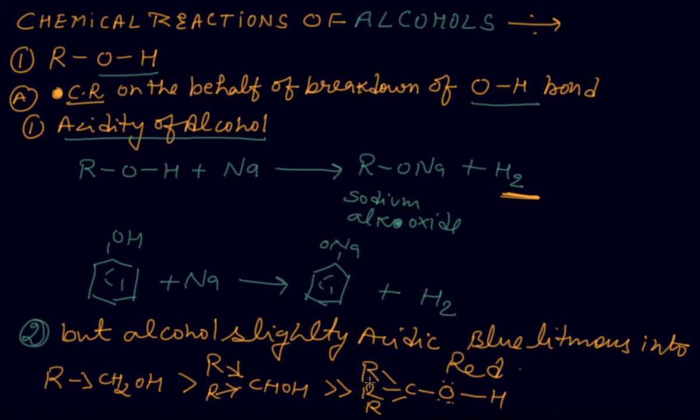If greater number of alkyl groups are present, then acidity is less because that oxygen required the electron and this electron demand is completed by the alkyl group. As you are watching, in the tertiary there are three alkyl groups, in the secondary there are two alkyl groups, and in the primary there is one alkyl group.